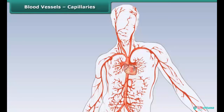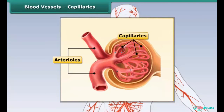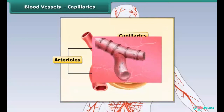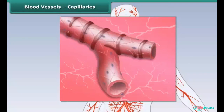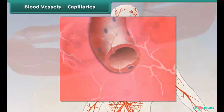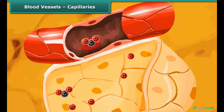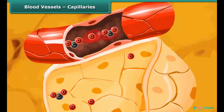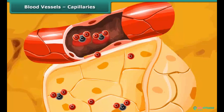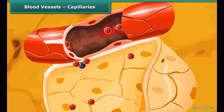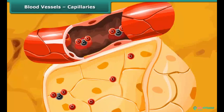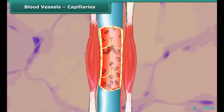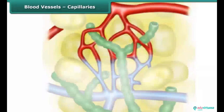Arteries branch into smaller blood vessels called arterioles, which further branch into capillaries. Capillaries are extremely thin blood vessels embedded in the tissues. They carry oxygenated blood from the arteries to the tissues. Oxygen in the RBCs and waste from the tissues are exchanged through the capillary walls. Capillaries carrying deoxygenated blood join to form venules, which in turn join to form veins.